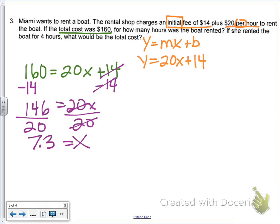And we're going to get 7.3. But, again, 7.3 what? x is going to be hours or time. So 7.3 hours is how long I had the boat on the water.